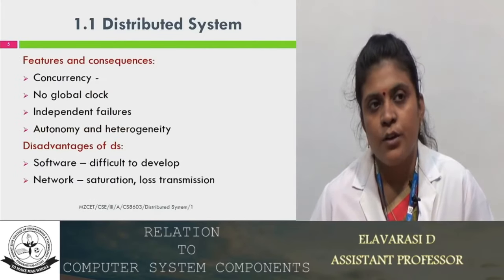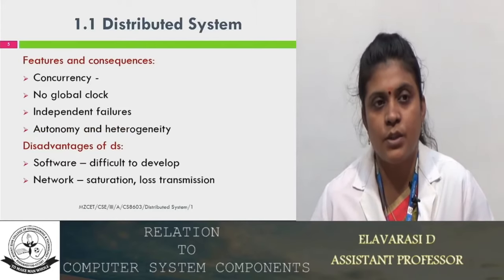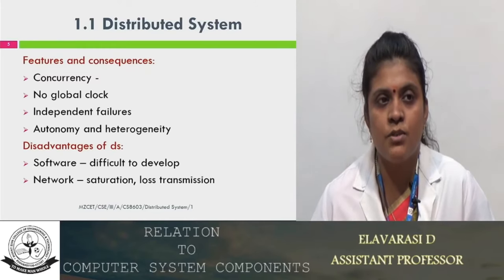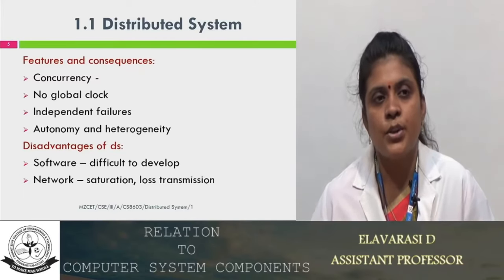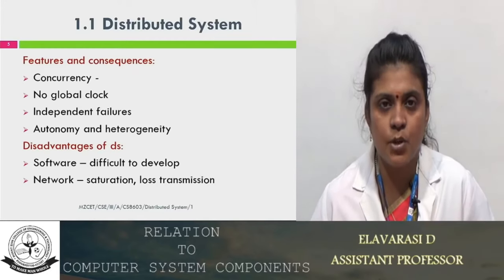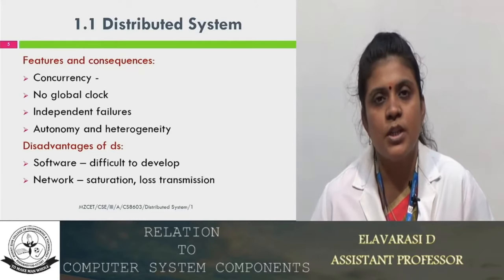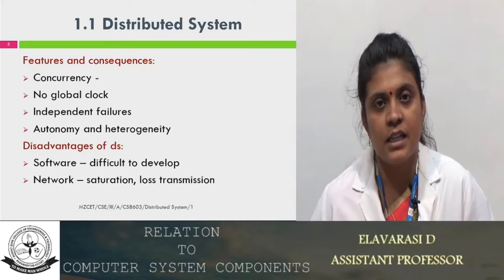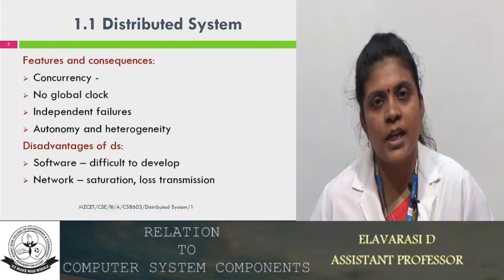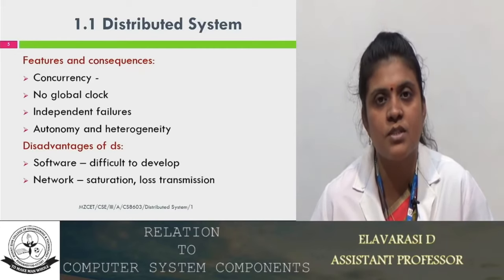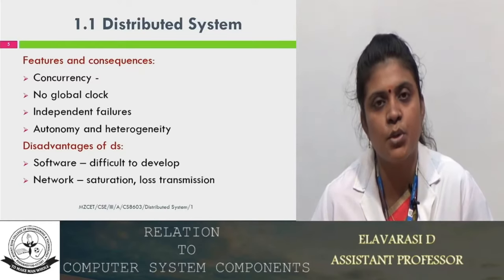For example, we are going to have a weather prediction. In that case, the processes which are placed in different geographical locations are able to predict the weather in particular locations. The information will be collected in a particular processor and communicated to another processor to make a prediction. It basically deals with big data — the data is large and the calculation is also large. We can find out the resources in different geographical locations and utilize the systems efficiently.